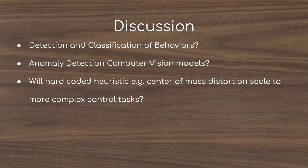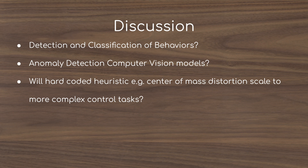The most interesting takeaway is the detection and classification of behaviors in control tasks. Both problems use heuristics for evaluating behaviors — sampling the final location in maze navigation and the center of mass in locomotion. It might be interesting to use anomaly detection or computer vision models that observe the agent and detect novel behavior automatically. The question is whether hard-coded heuristics like center-of-mass distortion will scale to more complex tasks like teaching a robot to shoot a basketball, or whether that will require a generative adversarial network modeling the distribution of behaviors to detect novelty.